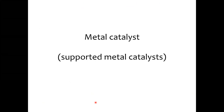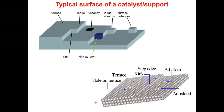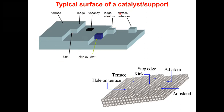A metal catalyst can be non-supported or supported. We'll focus on the supported metal catalyst. This is a typical surface of a catalyst support. Students might know that ruthenium on carbon or nickel on carbon is used as a hydrogenation catalyst — this is typically taught in master's and bachelor's programs. The support surface has features like terraces, ledges, vacancies, kink surfaces, kink adatoms, ledge adatoms, and surface adatoms. The surface is quite complex — like a road that is not homogeneous but heterogeneous.